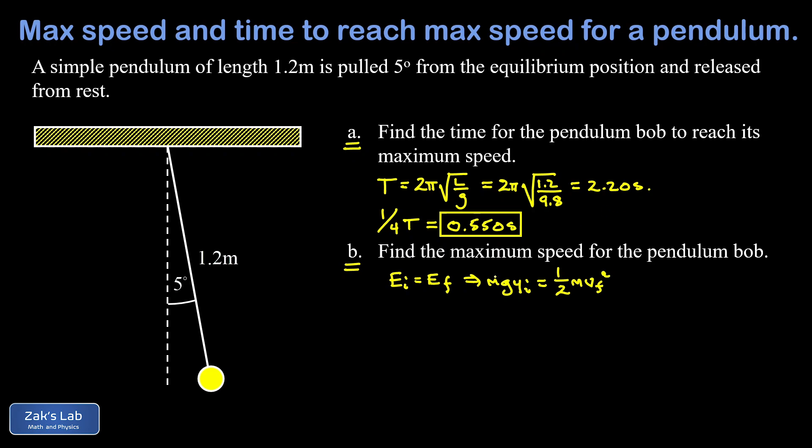So note again that the m's are going to cancel here. And just solving this symbolically, I find that v final is the square root of 2g y initial.